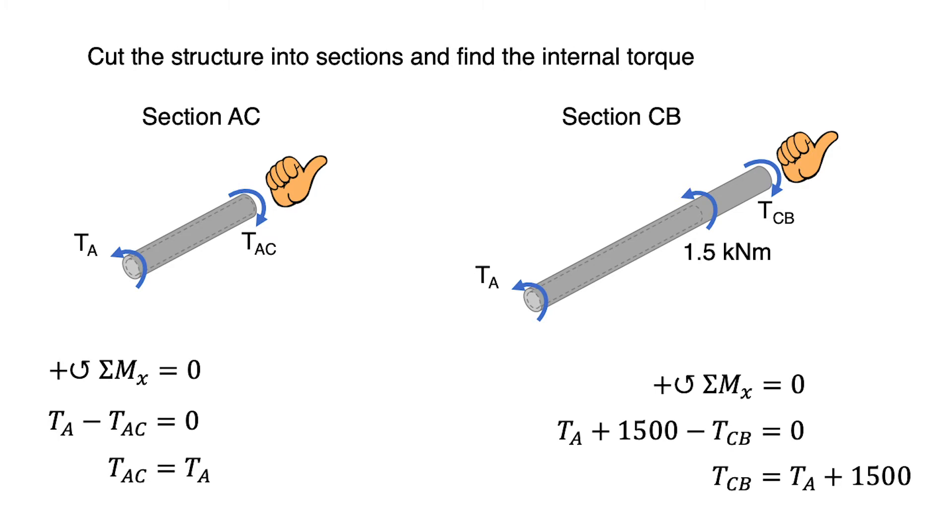Then for section CB, draw the free body diagram of CB and put the reaction torque at the cutting point as TCB. Find the value of TCB in term of TA. Now we get TAC = TA, and TCB = TA + 1500.